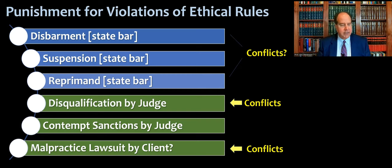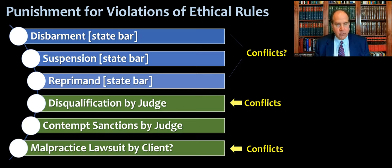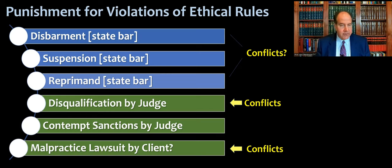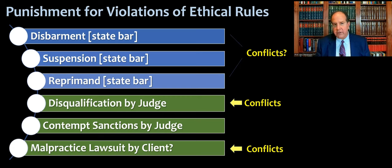There are also sanctions that can come from a judge. A judge could disqualify a lawyer from a case, which is what I've been talking about. They also could hold you in contempt of court and either fine you — that's the most common — or technically put you in jail, though that's rare. And keep in mind that the client has a remedy besides complaining to the bar: the client could later sue you for legal malpractice, which is a civil remedy.